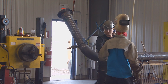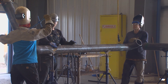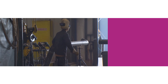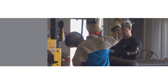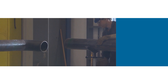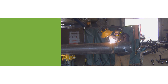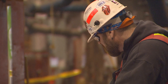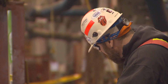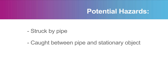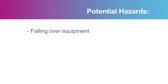Here's an example: your supervisor assigns you the task of fabricating a pipe spool. If we break down the job into steps, it looks like this — Step 1: moving material; Step 2: supporting the material; Step 3: aligning the flanges to the pipe; Step 4: grinding; Step 5: welding. Once you have the basic steps set out, look at the hazards for each one of the steps. Ask yourself, what could go wrong during that task? Some of the hazards might be: getting struck by pipe, getting caught between the pipe and a stationary object, having an unsecured load, or slips and falls over equipment, tools, or uneven ground.